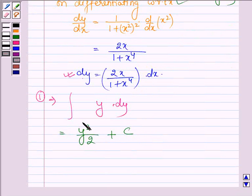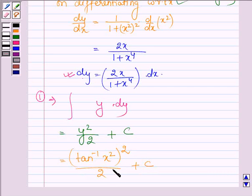Now let us substitute the value of y which is tan inverse x square. So here we have tan inverse x square whole square divided by 2 plus a constant.